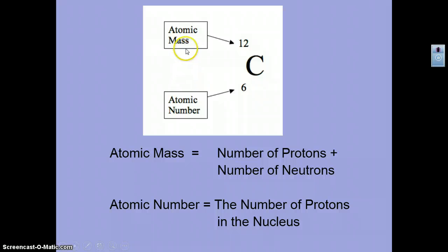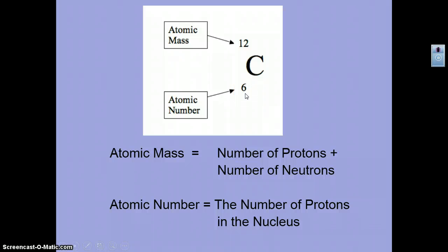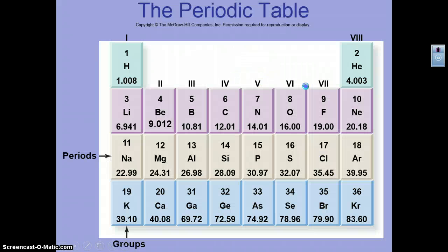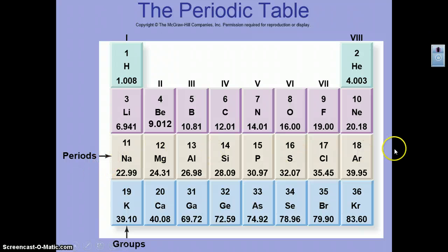The atomic mass is the number of protons and neutrons. The atomic number is the number of protons in the nucleus — this is the 'personality' of the atom; it tells us what element we're talking about. For example, carbon has the atomic number of 6. On the periodic table, the rows from left to right are periods, and top to bottom are the groups.